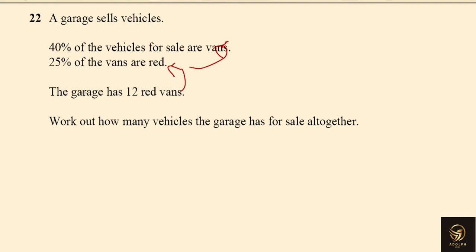The given red vans are 12, and 25% of the vans are red. So 25%, how will we write it? 25 by 100. But you have to multiply by its reciprocal if you are doing the backward calculation, which is 100 by 25.